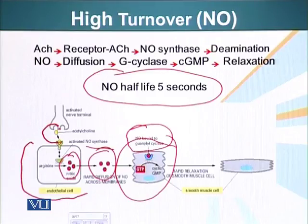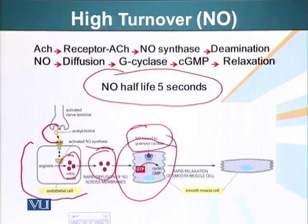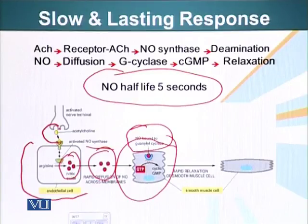Guanylyl cyclase produces cyclic GMP, which results in relaxation of the smooth muscles. Nitric oxide has a half-life of five seconds. Cyclic GMP is degraded by another enzyme, which is the target for a drug called sildenafil citrate, more commonly known as Viagra, which causes these cells to retain cyclic GMP longer than they normally would without the drug.